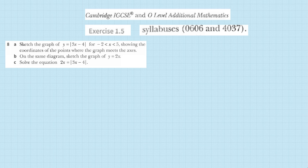Question number eight: sketch the graph of y = |3x − 4| for values of x from −2 to 5, where −2 and 5 are excluded because there is no equal sign with the inequality. Show the coordinates of the points where the graph meets the x-axis and y-axis. So first we write the equation for part (a): y = |3x − 4|.